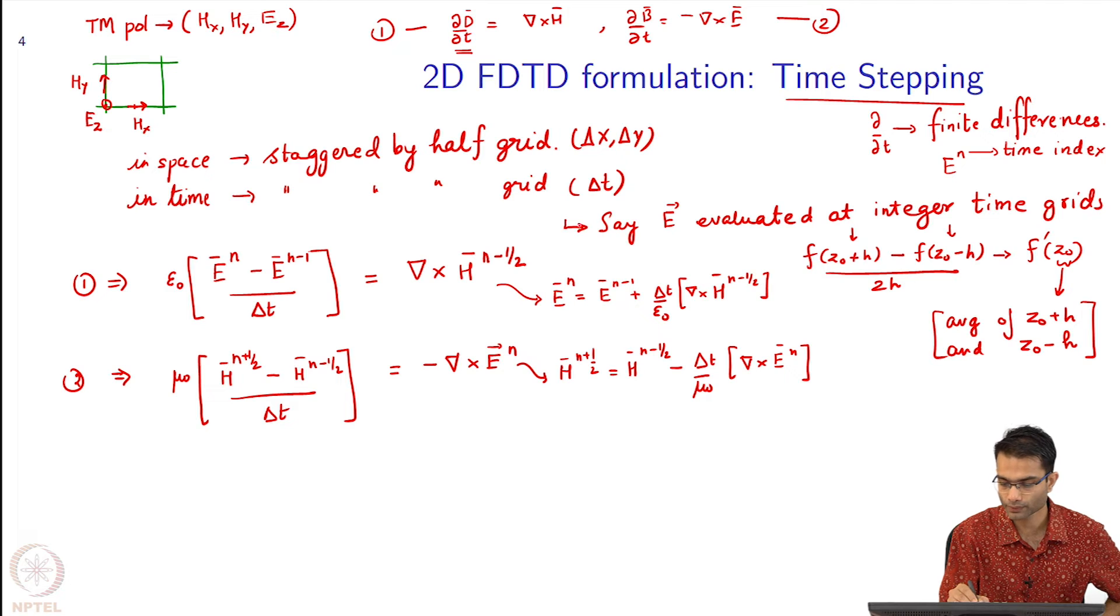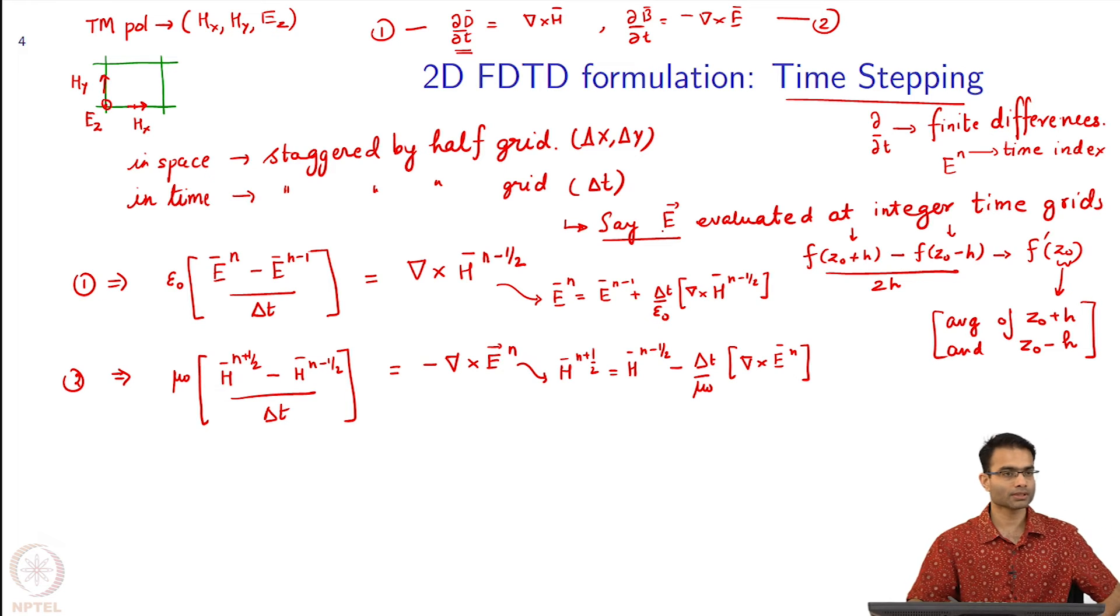Let me say that here, when we say E is evaluated at integer time grids, is a choice. I could have said E is evaluated at half integer time grids. Once I fix where E is evaluated, H automatically becomes staggered by half a grid. I have E evaluated at integer time instances, and if I want the value of E at a half time integer, what should I do? Like earlier, take the average. If you want it at some other point, interpolate. The choice is up to you, but once you fix one, everything else gets fixed. That is what I said - it is my choice, not coming from physics or math. It is a convention. Once I fix it, I have to be consistent with the rest.